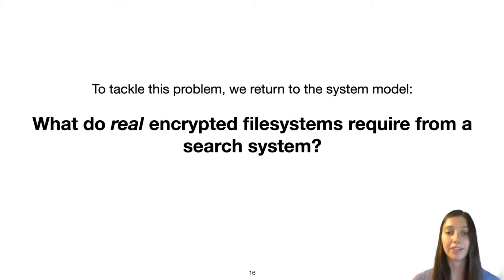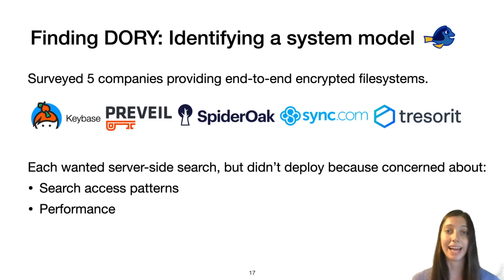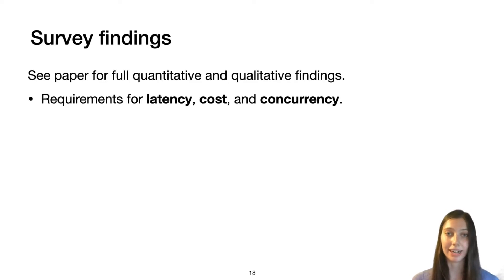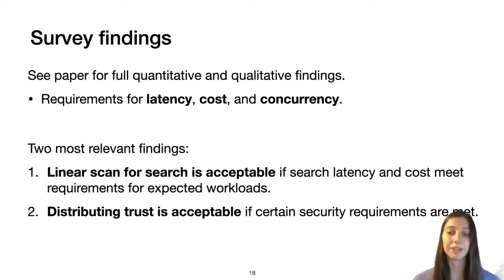To tackle this problem and understand the trade-off between efficiency and search access pattern leakage, we return to the system model and ask: what do real end-to-end encrypted file systems require from a search system? We surveyed five companies providing end-to-end encrypted file systems — Keybase, Prevail, SpiderOak, Sync, and Trezorit. We learned that each wanted server-side search but didn't have a solution deployed because of concerns about search access patterns or performance. I'll focus on the two most relevant findings for Dory's design: first, that a linear scan for search is acceptable if certain latency and cost requirements are met for expected workloads.